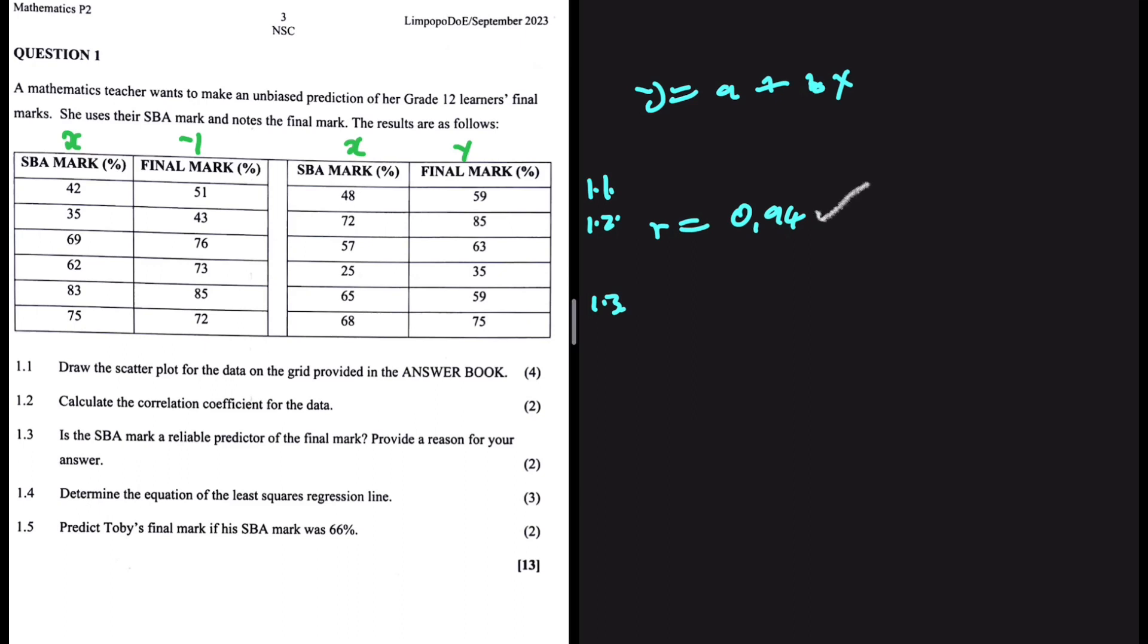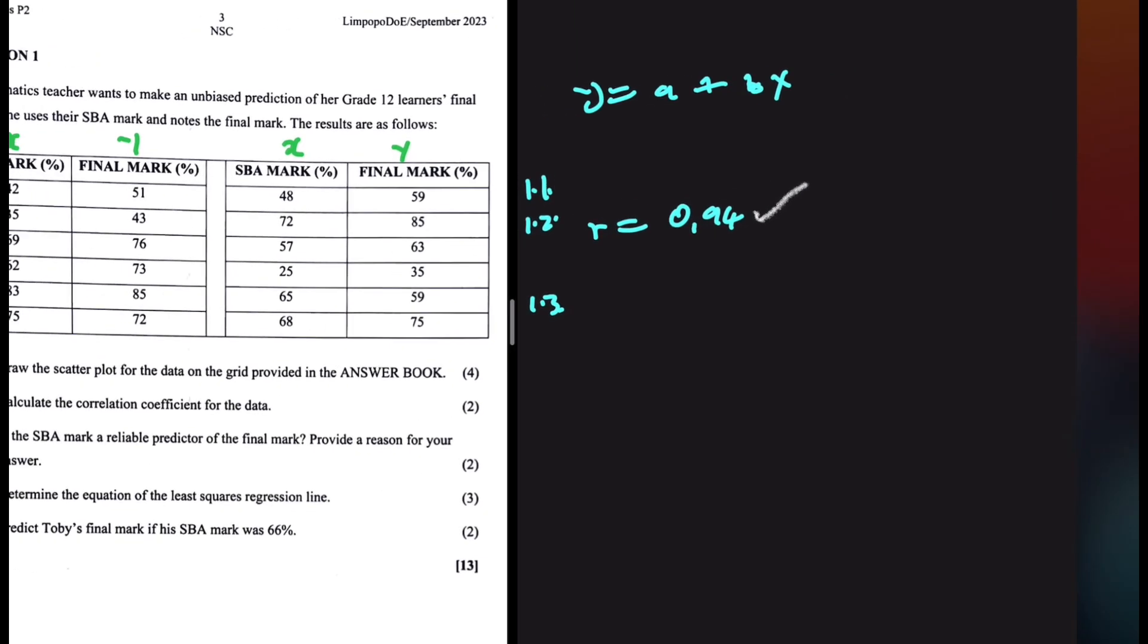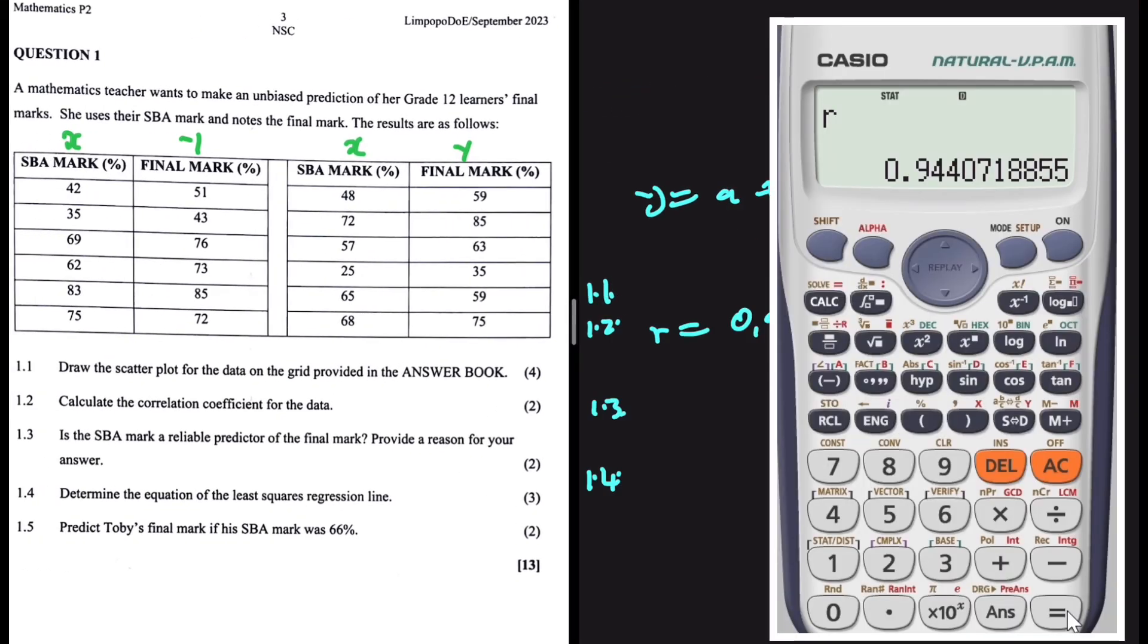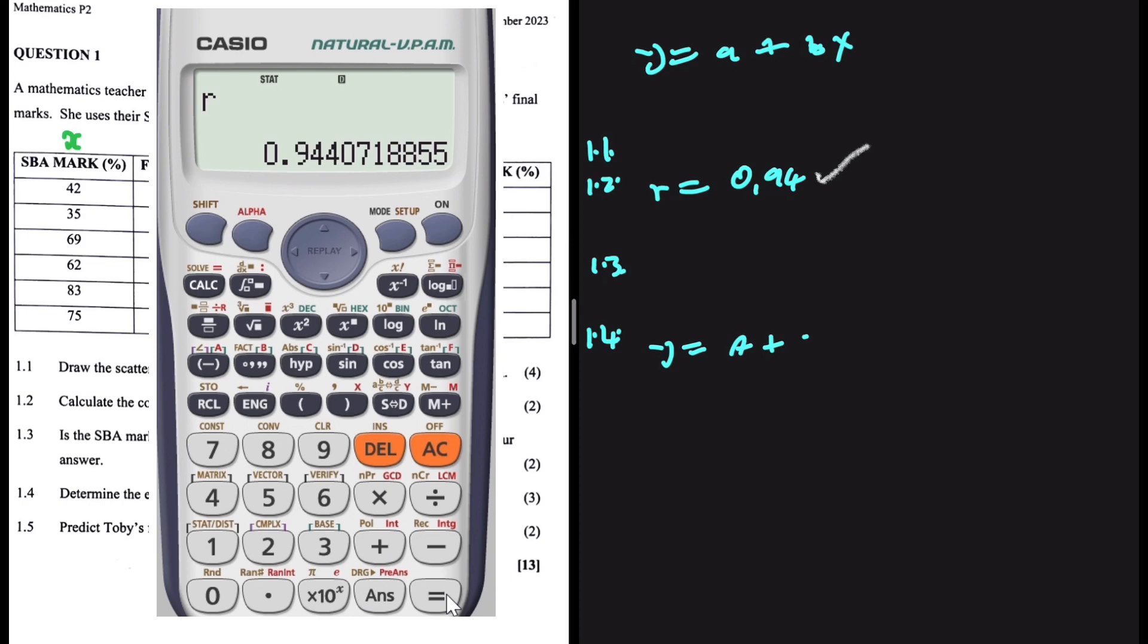Let's move to the next equation, 1.4. Determine the equation of the least square regression line. Like I've said, we have Y being equal to A plus BX. So we just need to find the value of A and the value of B using our calculator. So let's go ahead and do that.